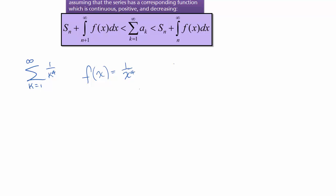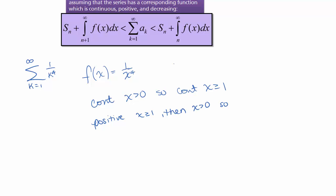So let's check: is it continuous? It's continuous for x greater than 0, so it's continuous for x greater than or equal to 1. The only point of discontinuity is when the denominator is 0. Is it positive? Well, if x is greater than or equal to 1, then x is positive, so 1 over a positive number raised to the fourth power is also positive.